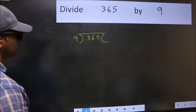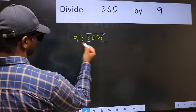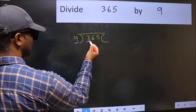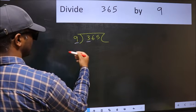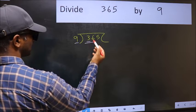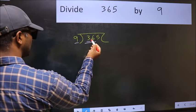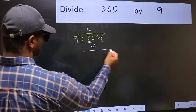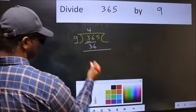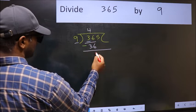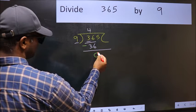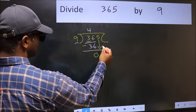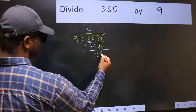Next, here we have 3 and here 9. 3 is smaller than 9, so we should take two numbers: 36. When do we get 36 in the 9 table? 9 fours 36. Now we should subtract. 36 minus 36 is 0. After this, bring down the next number. So 5 down.